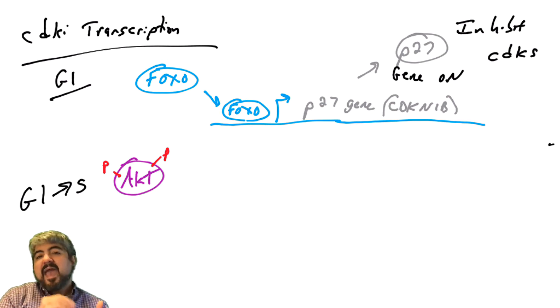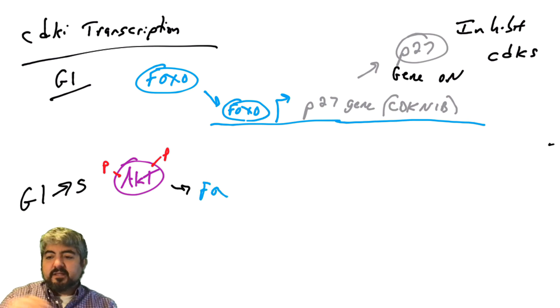Again, the AKT pathway activated very commonly via growth factor receptors, also known as receptor tyrosine kinases, via PI3 kinase, which will lead to the phosphorylation activation of AKT. And what does AKT do? It phosphorylates proteins, some of them, when it phosphorylates them, it inactivates them. So here, AKT will phosphorylate FOXO. FOXO is one of the substrates of AKT, which inactivates FOXO.